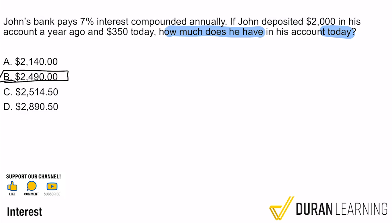The reason I highlight that is because if they're asking how much we have today, my first question is: what happened before? If you're asking me to tell you what's going on right now, I need to know what happened before right now. I'm just being practical here — it sounds simple, but that's how you have to think about it. Be simple about it.